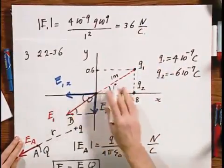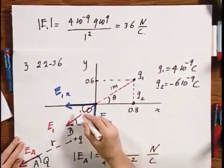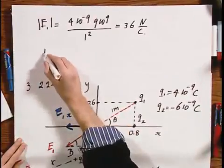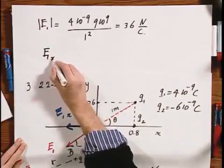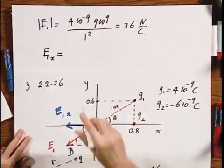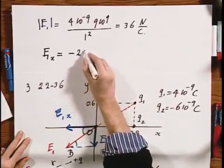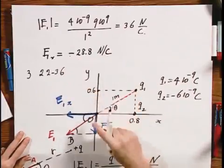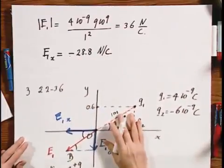What now is the x component? I now have to multiply by the cosine of theta. So E1 in the x direction then, multiplying by the cosine of this angle theta, would be minus 28.8 newtons per Coulomb. Why minus? Because it's pointing in the minus x direction.